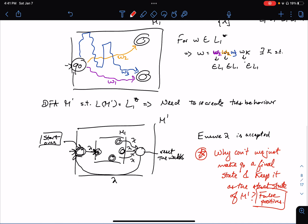This construction M' is the DFA that would accept L1 star. And again, that's because for a string to be in L1 star, it's just some concatenation of strings already in L1. So supposing we had done something like this.